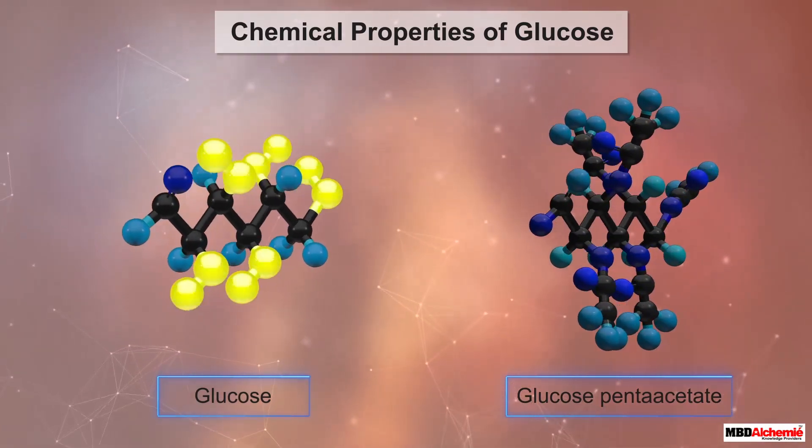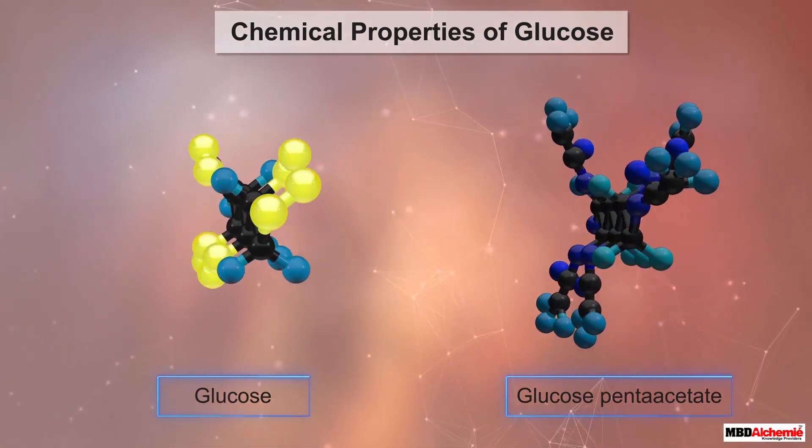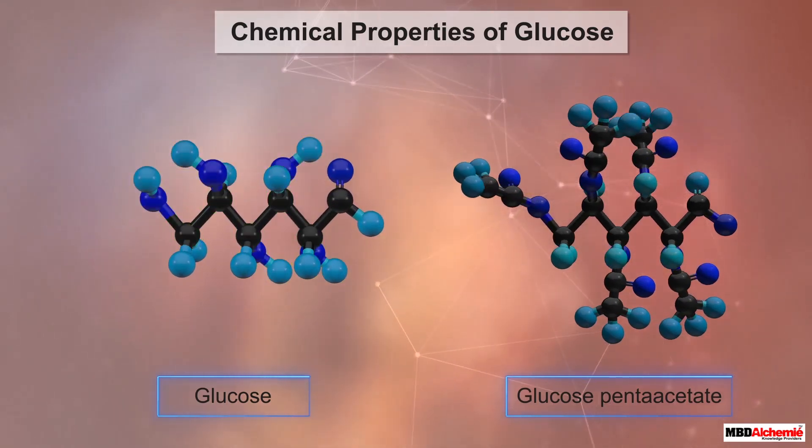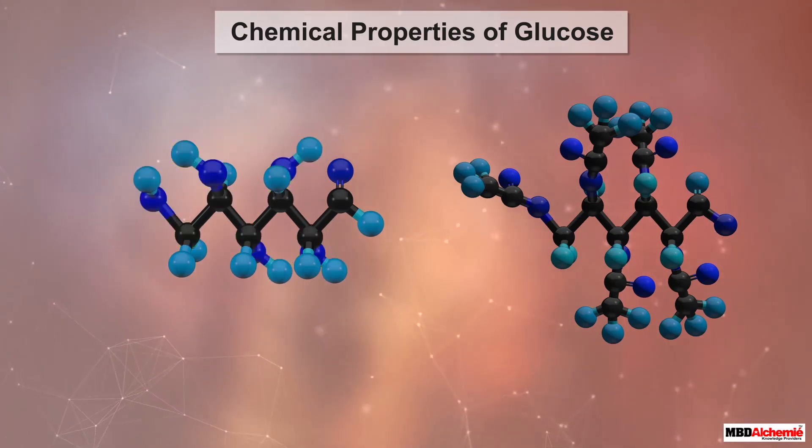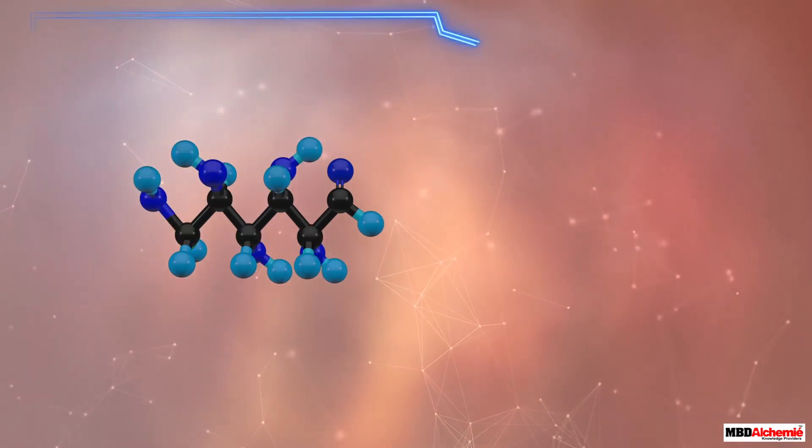Further, the high stability of glucose suggests that these five hydroxyl groups are attached to five different carbon atoms.